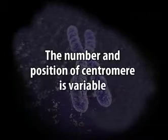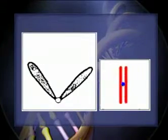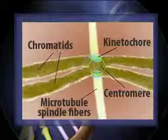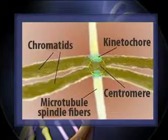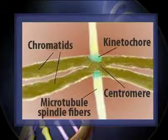The number and position of the centromere is variable but is definite in a specific chromosome of all cells and in all individuals of the same species. According to the number of centromeres, eukaryotic chromosomes may be acentric (without any centromere), monocentric (with one centromere), dicentric (with two centromeres), or polycentric (with more than two centromeres). The centromere divides the chromosome into two or more equal or unequal chromosome arms. A chromosome may be characterized by its total length and the position of the centromere.